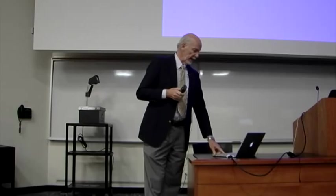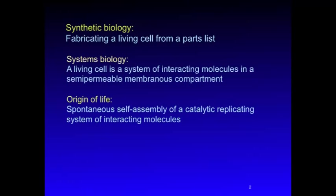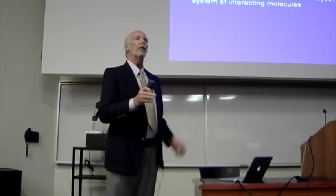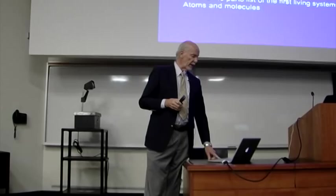Finally, we have the origin of life. Systems biology and synthetic biology are related to the origin of life because this is something that we believe as scientists occurred spontaneously on the early earth. We think that the laws of chemistry and physics are sufficient to explain how life can begin. We don't know the whole answer yet — you're going to see a progress report. The origin of life is the spontaneous assembly of catalytic replicating systems of interacting molecules.